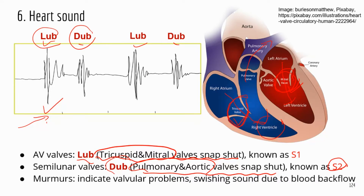Murmurs indicate some heart issues — usually a problem with the heart valves. When you hear murmurs, it's caused by a swishing sound when blood is going back, which is not good because you don't want any backflow. So that backflow causes the swishing sound — that's what causes murmurs.